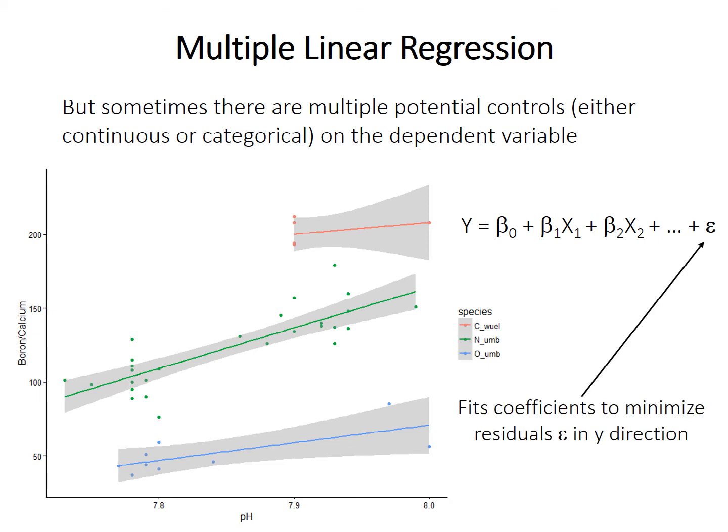Without getting into the mathematics of multiple regression, it works in much the same way as simple linear regression. The model coefficients are fit in a way that minimizes the sum of squares of the residuals in the y-direction. Same as simple linear regression, just now instead of one slope coefficient, we have multiple regression coefficients that end up being a little harder to interpret, as you'll see in a second.